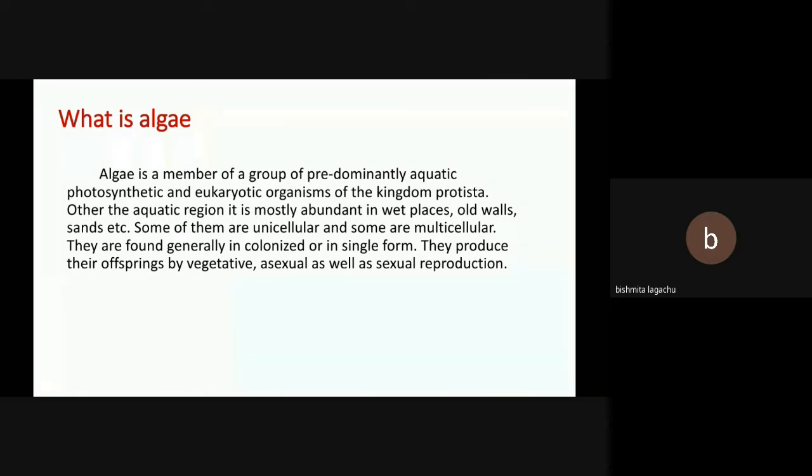Algae are found in aquatic regions. Some of them are unicellular and some are multicellular. They are found generally in colonies or in single form. They produce their offspring by vegetative, asexual, as well as sexual reproduction.